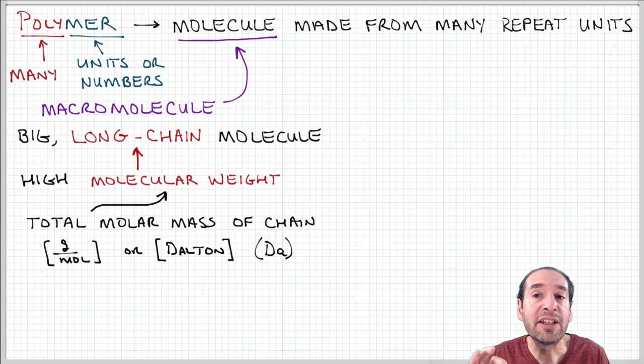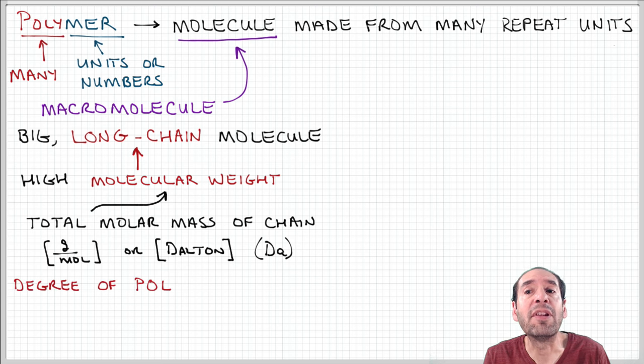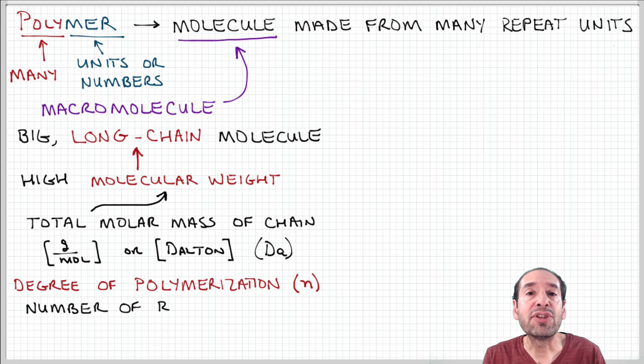Now, the molecular weight tells us how big the molecule is in terms of how much stuff it contains. But it doesn't immediately tell us that this is a chain-like structure as opposed to a blob-like structure. It doesn't tell us how long the chains are. So there's another parameter we can use that can tell us that.